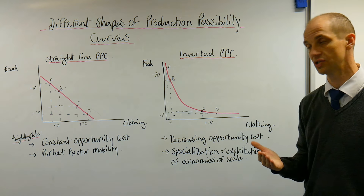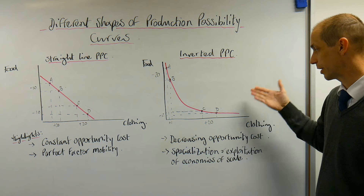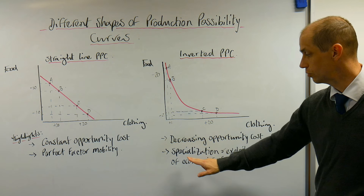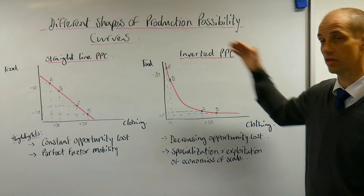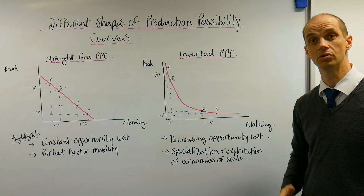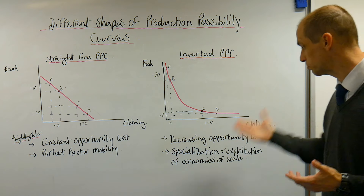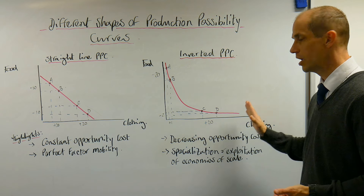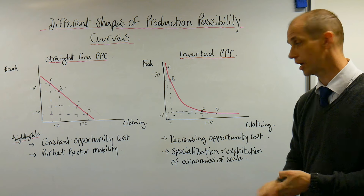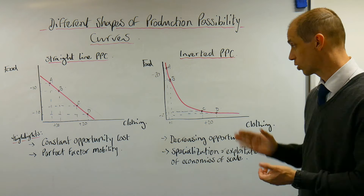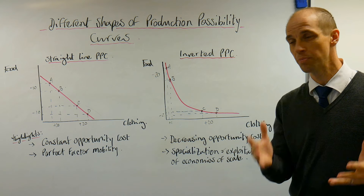An economy is likely to choose between different specialisms — whether it focuses on producing food or clothing depends on where its advantages lie. Choosing to specialise allows factors of production to become highly specialised, enabling very large economies of scale through specialist workers and machinery, really boosting productivity. As such, moving resources away has a big impact on production. If you move from D to C, you forgo quite a substantial amount of clothing production just to gain two extra units of food.